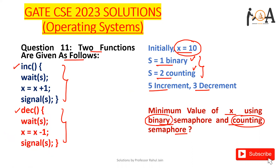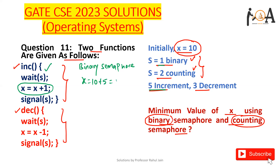Starting with binary semaphore: the concept is simple. In binary semaphore, we can perform operations individually because there is a single thread and the semaphore value is 1. So we simply perform the 5 increment operations first. The initial value of x is 10, so after 5 increments it becomes 15.